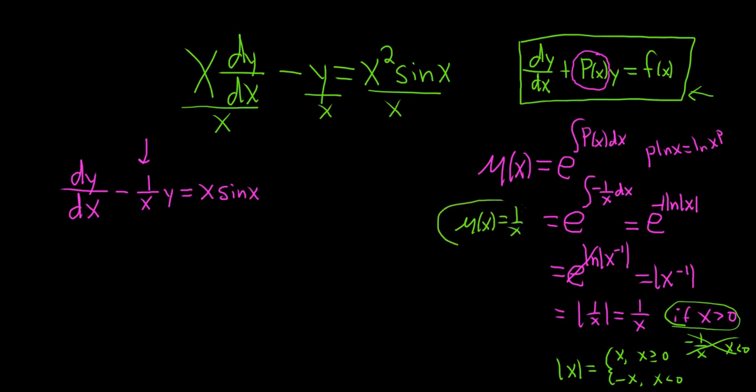The next step is to multiply your DE by the integrating factor. And that's why if you had chosen negative 1 over x, you'd basically have a negative 1 on each term, but then you just multiply by negative 1 again and it goes away. So it doesn't matter which one you use.